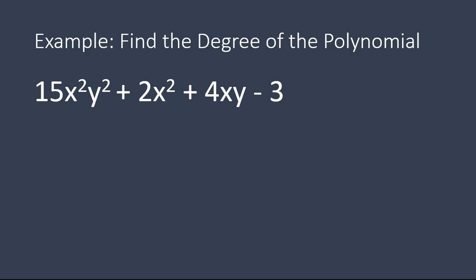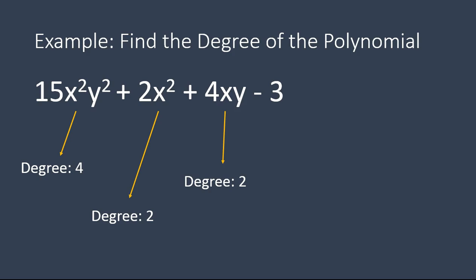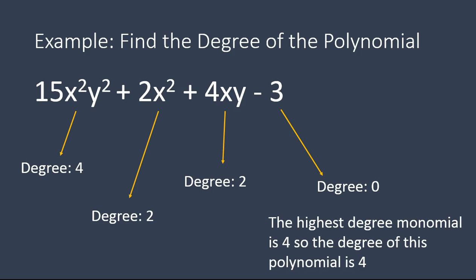The first term, 15x squared y squared, has a degree of 4 — 2 plus 2 is 4. The second term, 2x squared, has a degree of 2. The third term, 4xy, means x to the power of 1 and y to the power of 1, so 1 plus 1 is 2. The final term, negative 3, has a degree of 0. When finding the degree of a polynomial, you look at all the terms and the highest degree is the degree of the polynomial. This polynomial has a degree of 4.